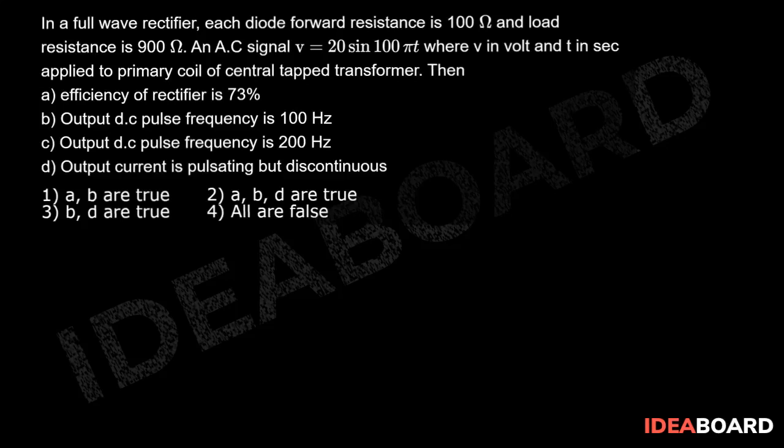For a full wave rectifier, efficiency η = 0.812 × (RL/(RL + RF)) × 100. Here, RL is given as 900Ω and RF is given as 100Ω. Putting these values in the formula: